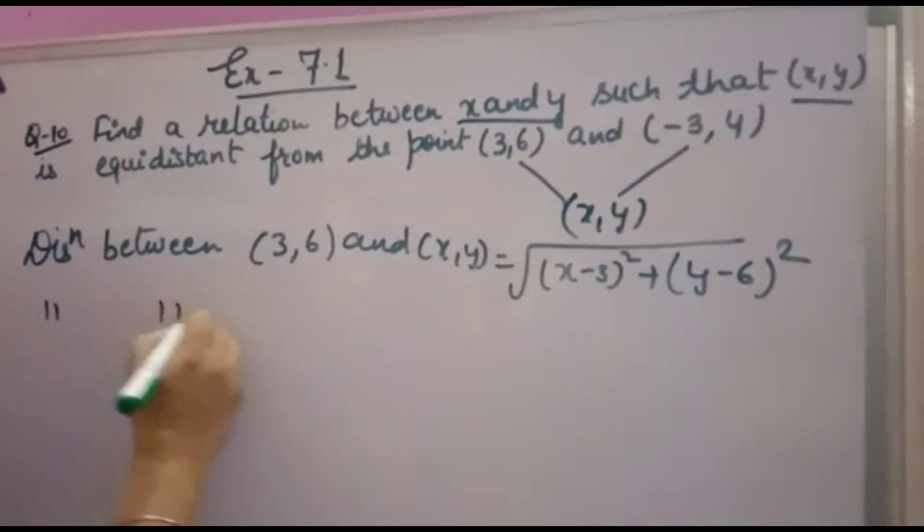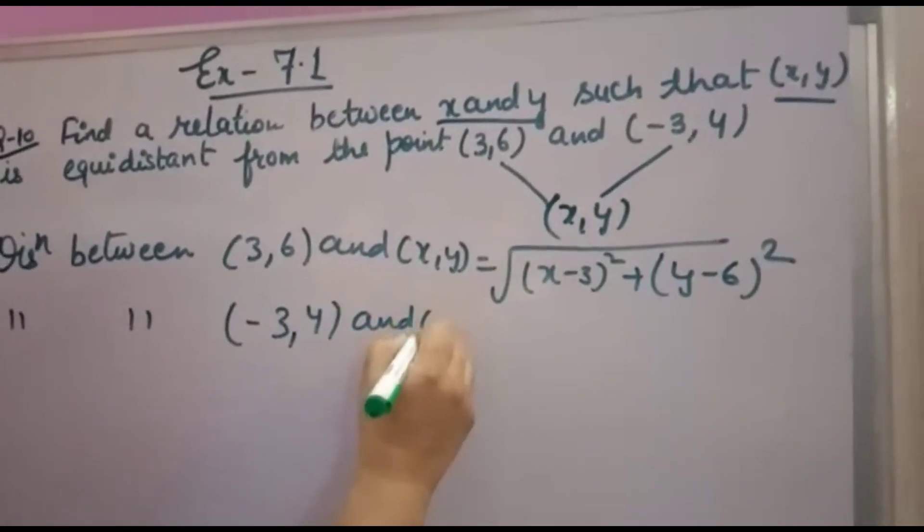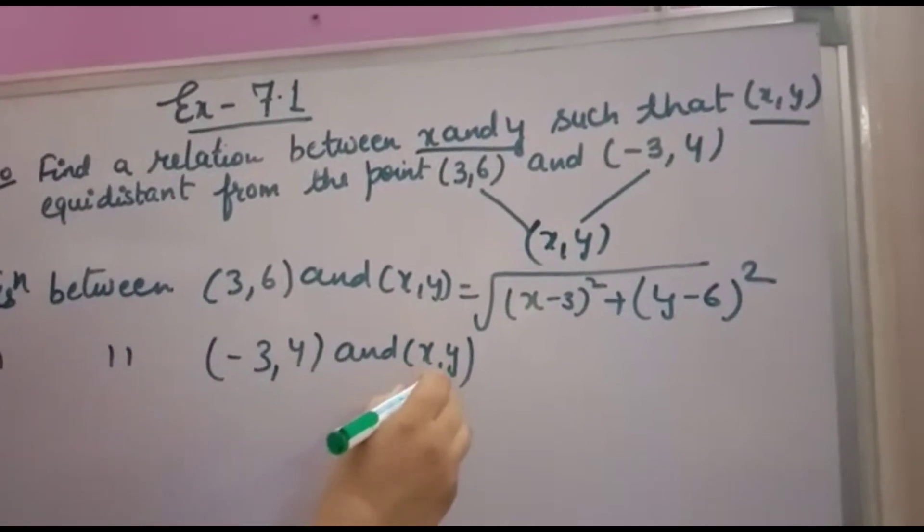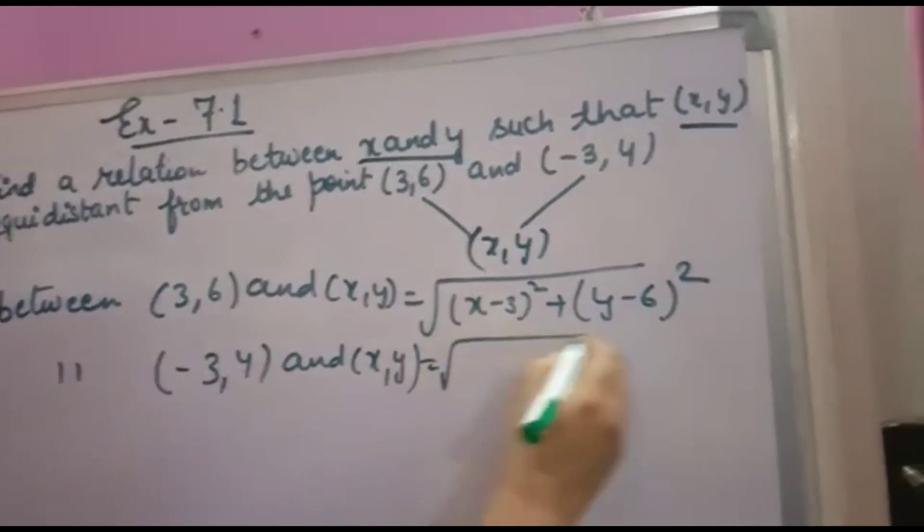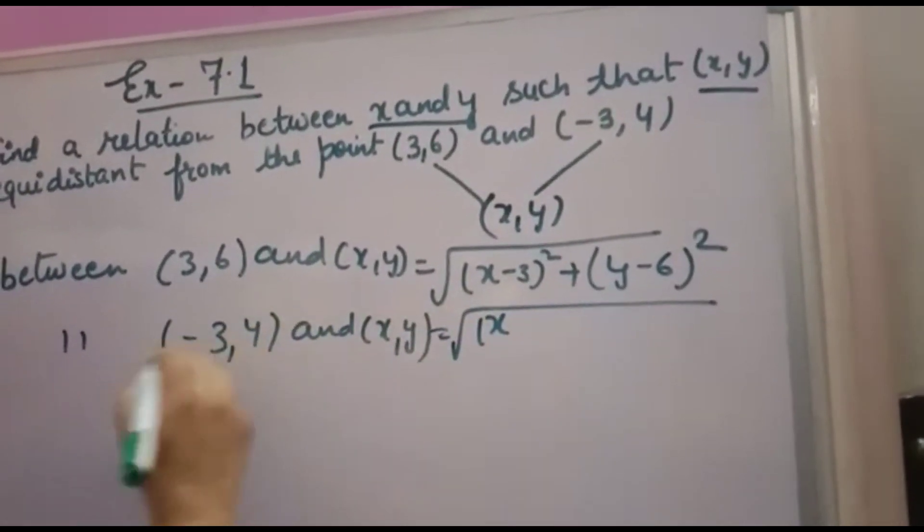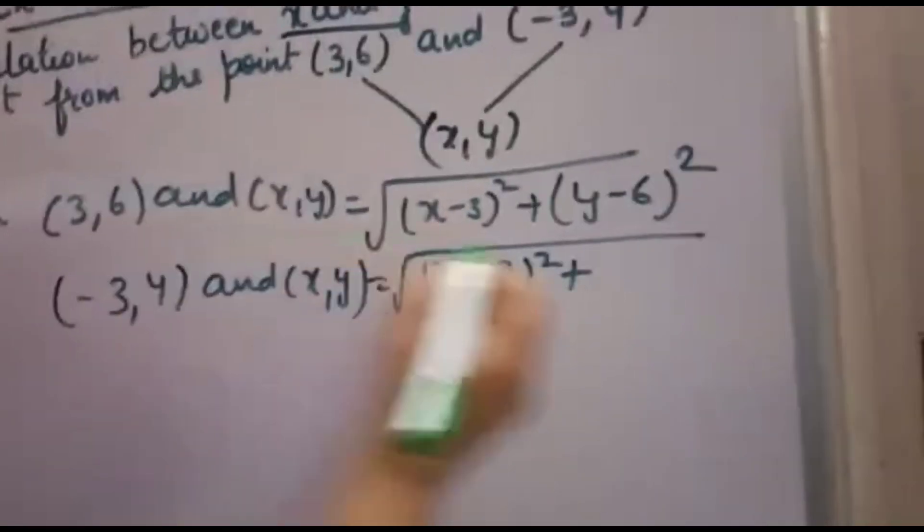And distance between point (-3,4) and (X,Y): Now this is X1, this is Y1, this is X2, this is Y2. So X2 minus X1, that means X minus (-3), which means (X plus 3) whole square, plus Y2 minus Y1, which means (Y minus 4) whole square.